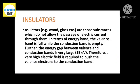First, we will discuss the insulator. Insulators are those substances which do not allow the passage of electric current through them. Examples include wood and glass. In terms of the energy band, the valence band is full while the conduction band is empty, so there are no free electrons available for current flow.